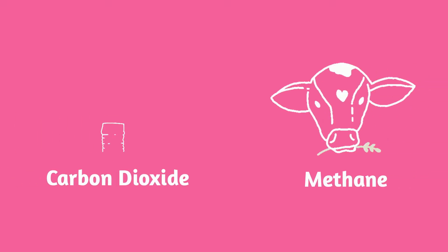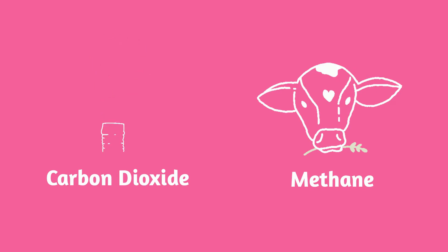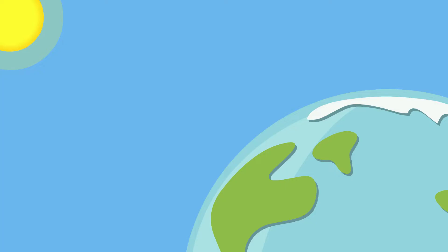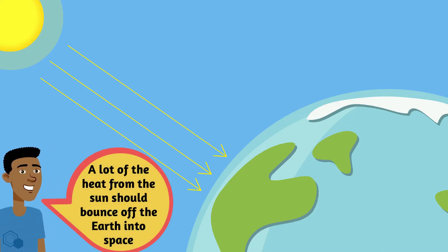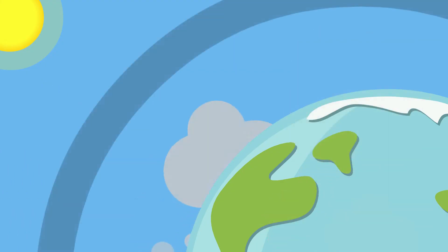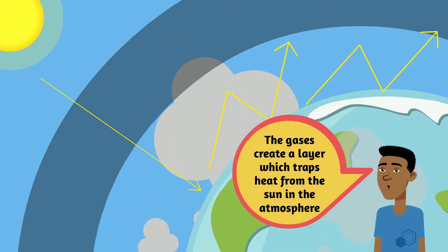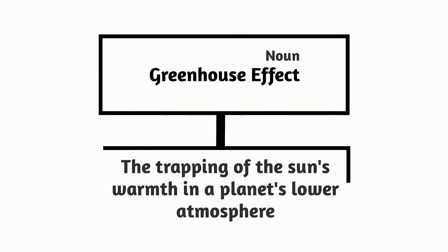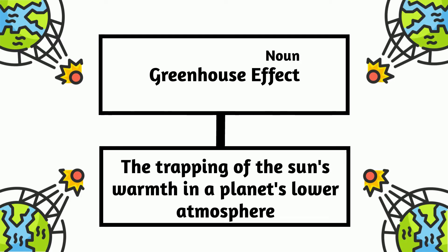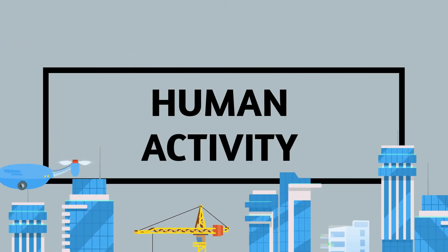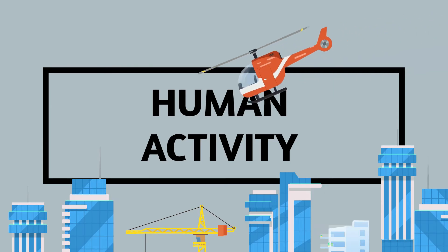The two gases causing the problem of climate change are carbon dioxide and methane. A lot of the heat from the sun should bounce off the earth into space, but with the additional carbon dioxide and methane in the atmosphere, this creates a layer which traps heat from the sun in the earth's atmosphere. We have a term for this — it is called the greenhouse effect. The full definition is the trapping of the sun's warmth in the planet's lower atmosphere. Unfortunately, the main cause of climate change, global warming, and the greenhouse effect is human activity.